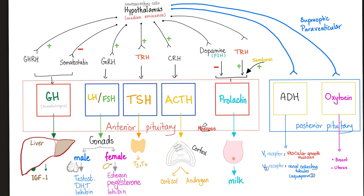Here's the lovely hypothalamus, particularly the supra-optic nucleus, which releases ADH. ADH leaves, goes to the posterior pituitary as you see here, and then leaves and goes to the bloodstream where it has some receptors. The most famous one is in the kidney, which is V2. V stands for vasopressin.